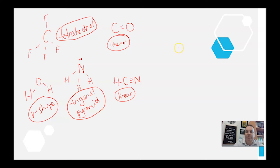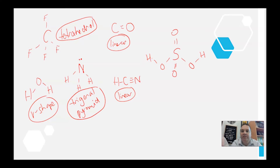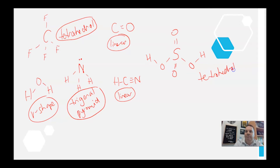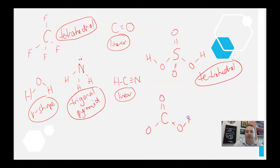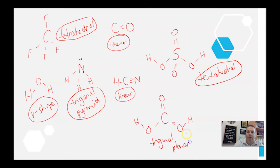Now the couple of harder ones. Sulfuric acid has double-bonded oxygens above and below, and single-bonded oxygens on each side. As an acid, the hydrogens are bonded to the oxygens. There's a bent or V-shape around each oxygen, but we refer to the central atom — four oxygens around it — which is a tetrahedral arrangement. Carbonic acid has a double-bond oxygen and oxygens with hydrogens on either side; the central carbon arrangement is trigonal planar.